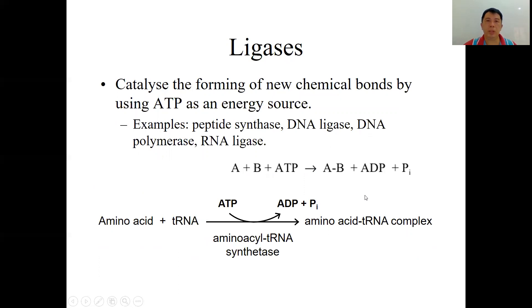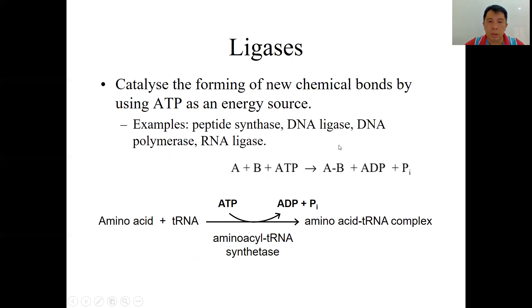The last class is ligases. Ligases join two molecules or compounds together by forming a new chemical bond, using ATP as the source of energy. Examples include peptide synthase and DNA ligase. For instance, amino acid-tRNA synthetase catalyzes the binding of an amino acid to tRNA to form an amino acid-tRNA complex.